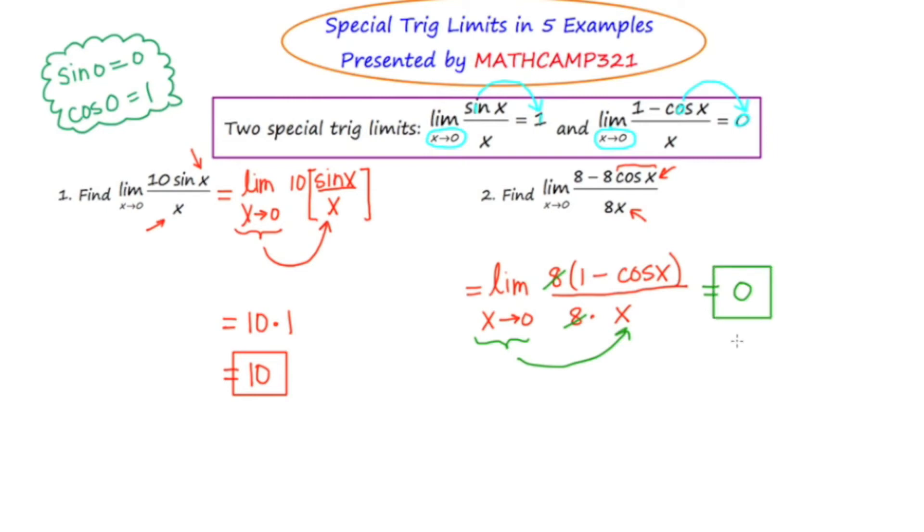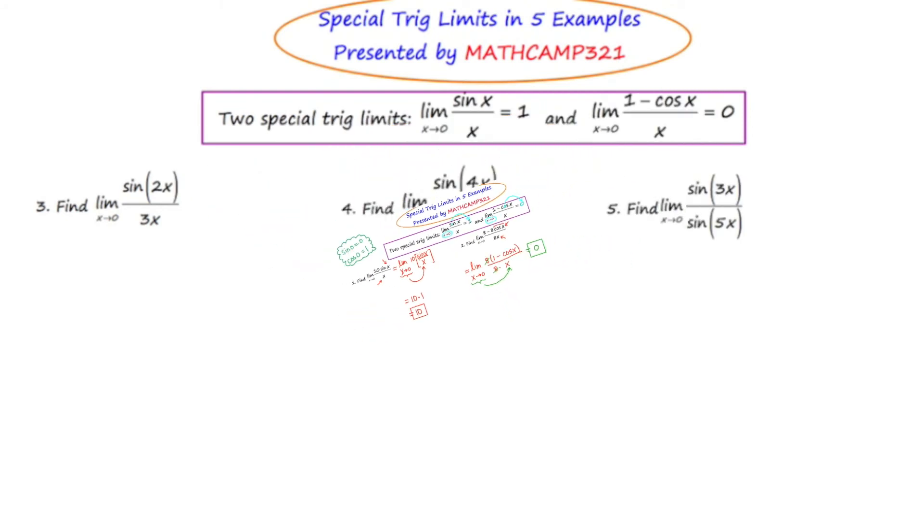So that was pretty easy. Okay, let's try a few more examples. Let's take a look at example 3. Find the limit of the expression sine 2x over 3x as x approaches 0.